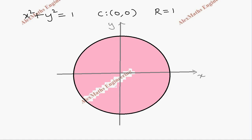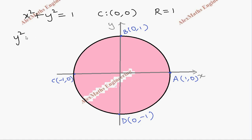Since the radius is 1, we label the key points: A is (1, 0), B is (0, 1), C is (−1, 0), and D is (0, −1). The equation of the circle is x² plus y² equals 1, which gives y² equals 1 minus x², and y equals plus or minus the square root of 1 minus x².